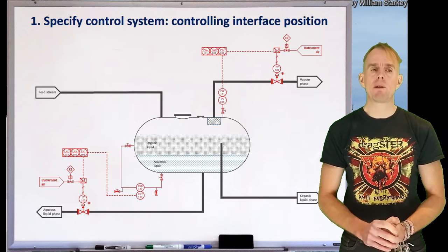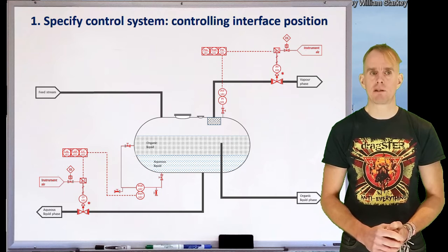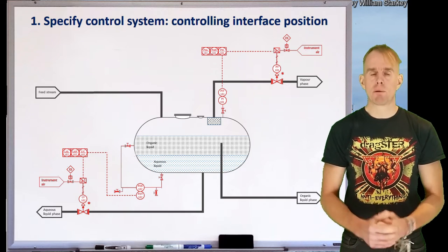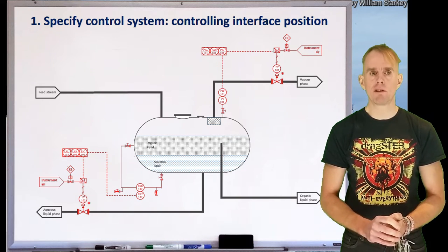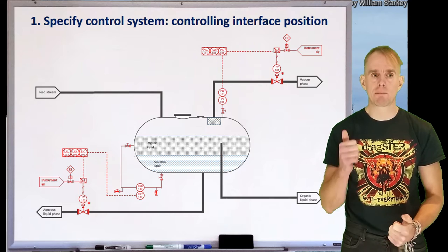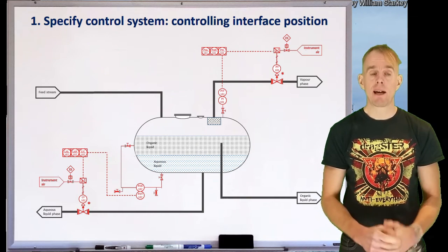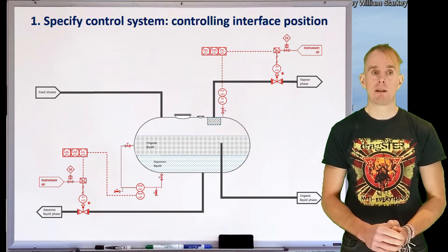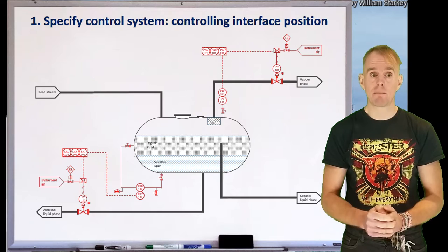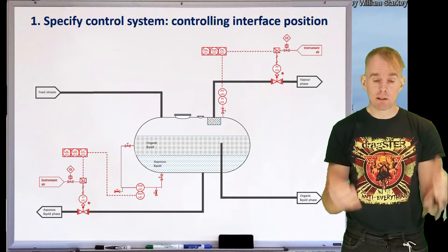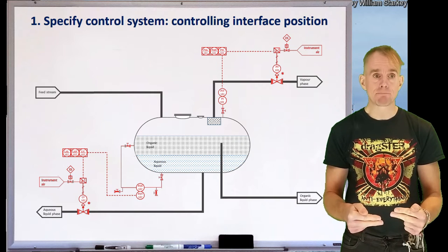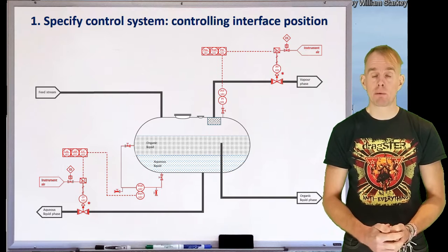Now let's think about the unsteady state — specifically how we control the position of the interface between the two immiscible phases. We're going to measure pressure in a different way: by measuring static head. To do this we need two pipes connected into the vessel — one connected to the base of the vessel contacting the aqueous liquid, and one at roughly the midpoint of the organic liquid. These small-bore pipes are valved and normally open, feeding into a differential pressure measurement device, a PDE.